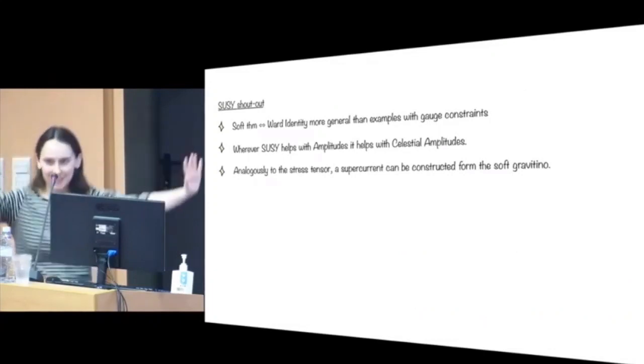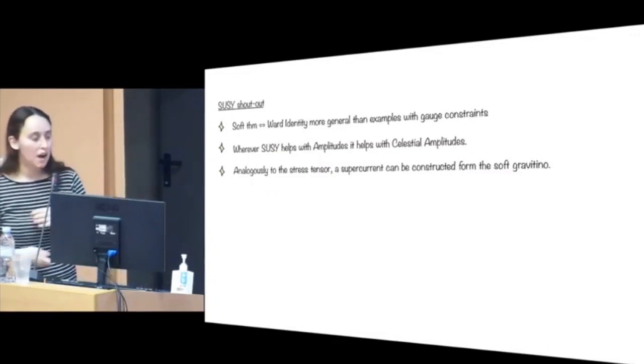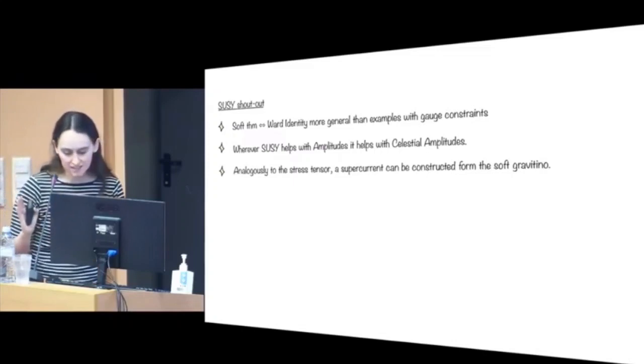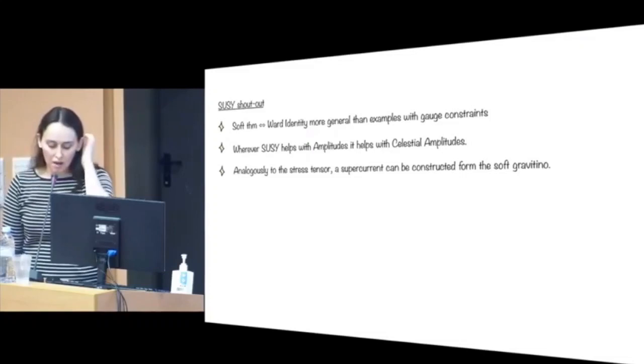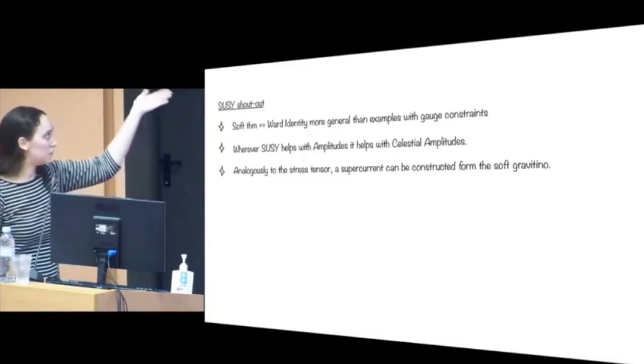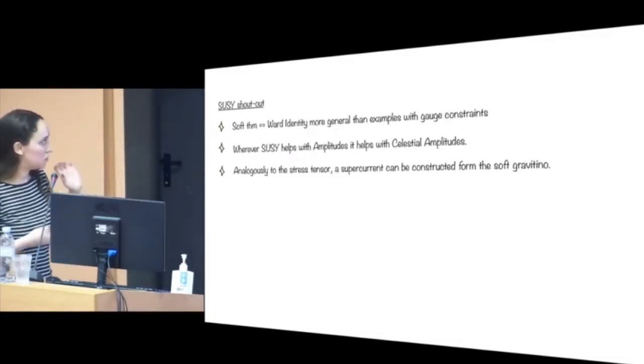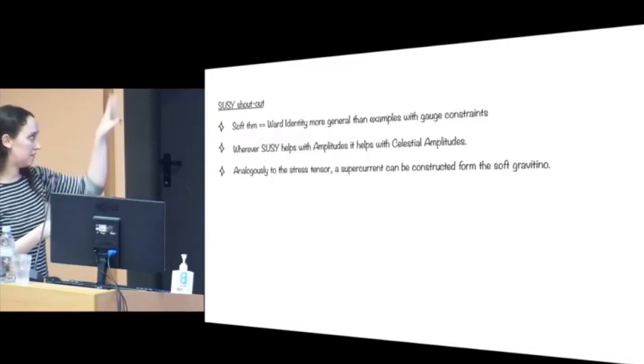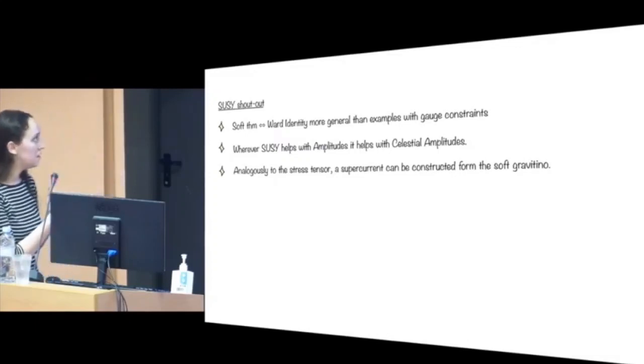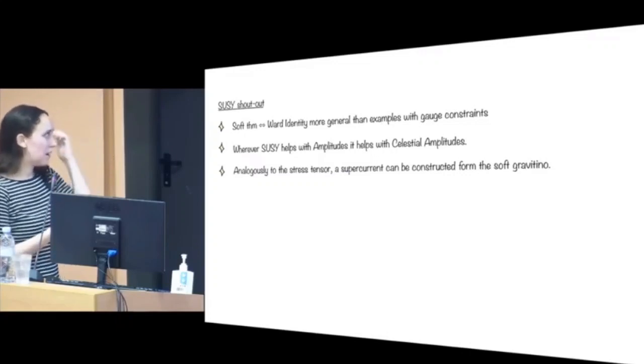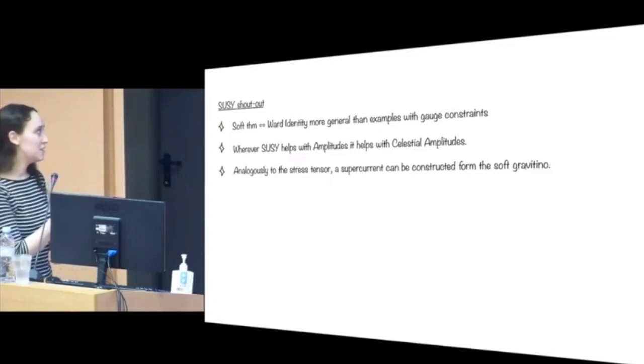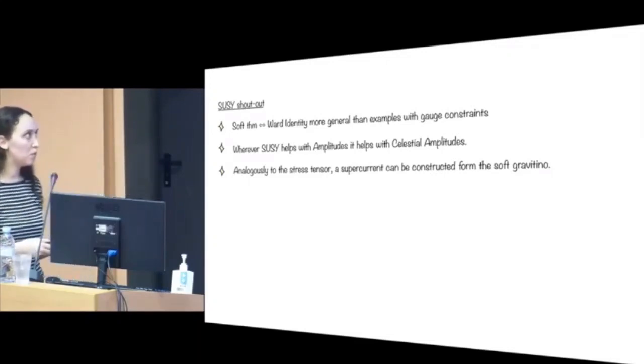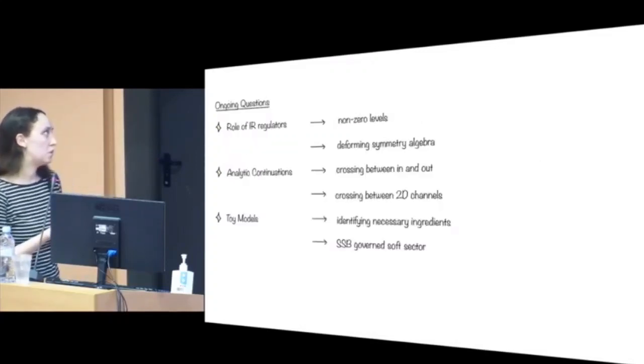Let's do a very brief SUSY shout out because the audience is a SUSY audience. So where have insights from supersymmetry helped us? One concrete example is where basically the soft theorems equivalents to the Ward identity. The easiest cases are where you have a gauge symmetry because basically you're just doing Gauss's law. But it's less obvious when you have particles without a gauge symmetry. The soft photino is related by supersymmetry to one that is and it has a soft theorem. And then similarly to the stress tensor, you can define a supercurrent from the soft gravitino.